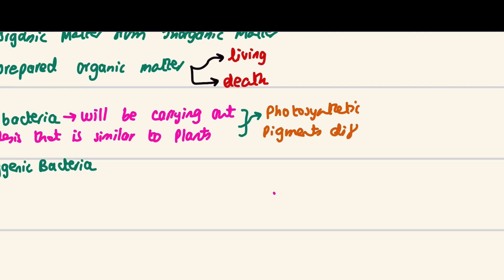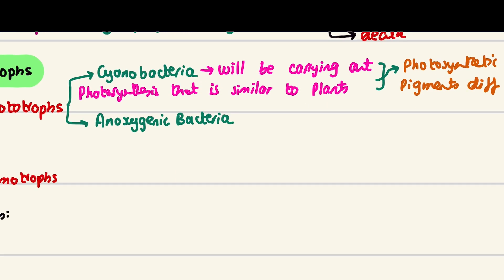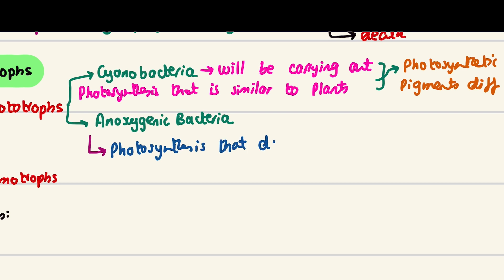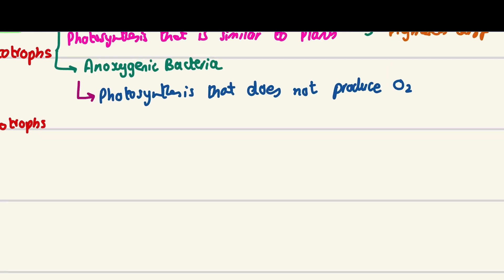We have more anoxygenic bacteria. The word 'anoxygenic' is essentially telling us this is photosynthesis — or photosynthetic bacteria — that does not produce oxygen. Let's quickly look at our normal photosynthesis equation for comparison.